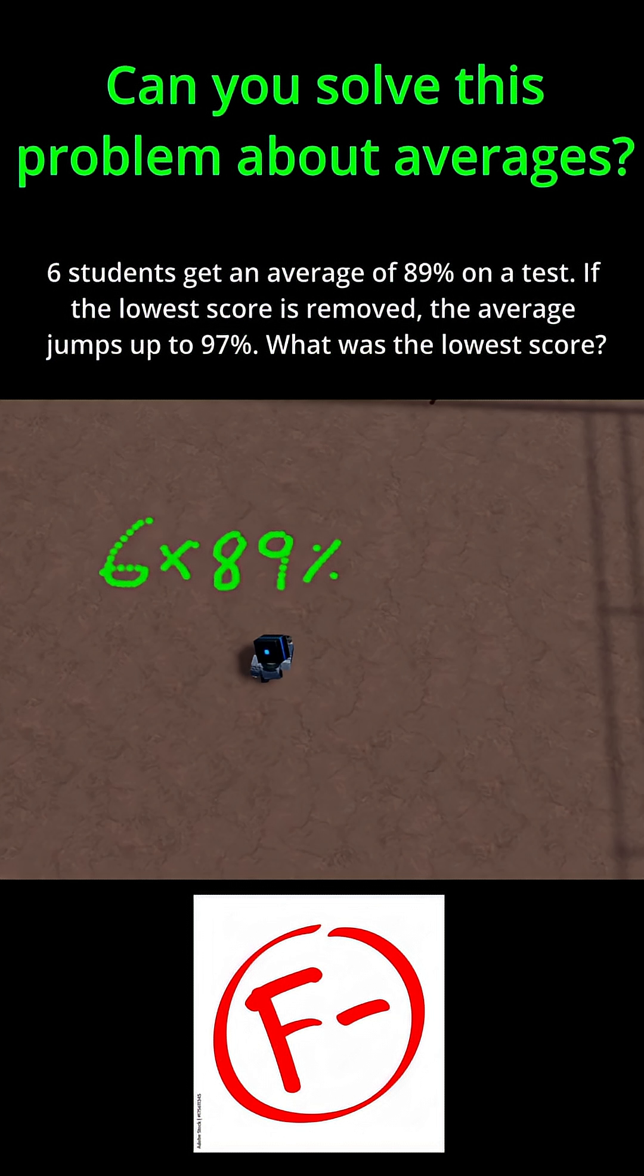Now, in reality, each student probably did not get an 89 on this test, but this is what an average allows us to do. And what this does is, if I do 6 times 89%, I find that the total percentage sum across all of those tests is 534%. So basically, if I add up each student's score, it would sum up to 534 total percent.